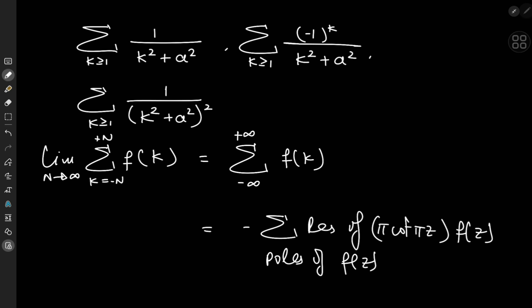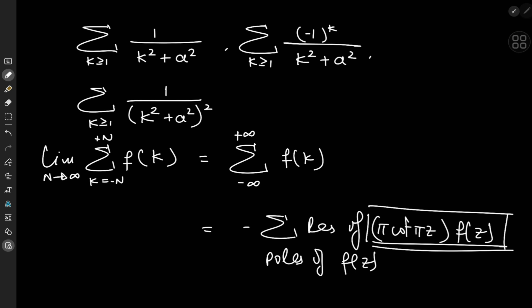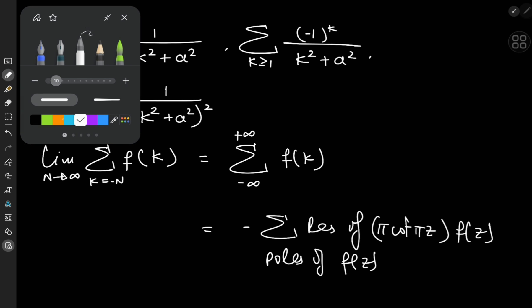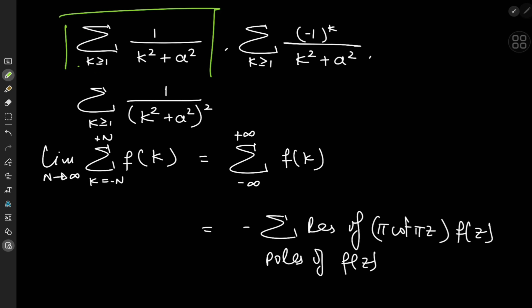Bear in mind that we're only evaluating the residues at the poles of the function f(z), not the poles of f(z) times the cotangent term. If you're interested in a proof of this formula, I've linked in the description a PDF file that explains the derivation quite thoroughly — it's a really well-written piece, so do check that out.